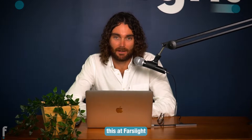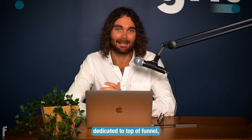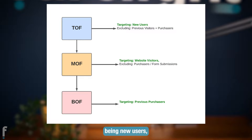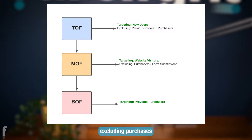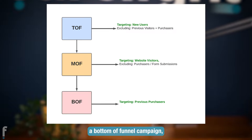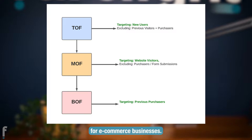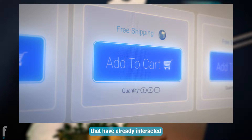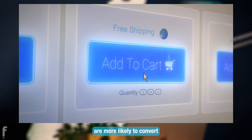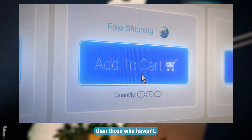The way that we combat this at FastSight is having a campaign dedicated to top of funnel — being new users excluding website visitors and purchases. We'll have a middle of funnel campaign set up to target previous website visitors, excluding purchases, and in some cases a bottom of funnel campaign targeting previous purchases, which works really well for e-commerce businesses. Users that have already interacted with you before are more likely to convert than those who haven't.